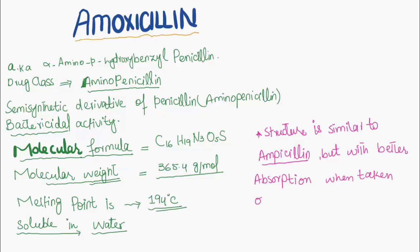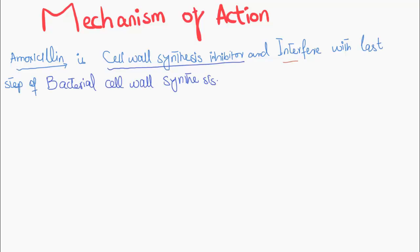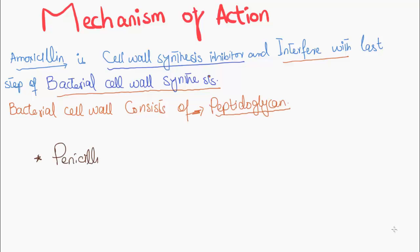But with better absorption when taken by mouth. Mechanism of action of amoxicillin: it is a cell wall synthesis inhibitor and interferes with bacterial cell wall synthesis. Bacterial cell wall consists of peptidoglycan and penicillin-binding proteins.